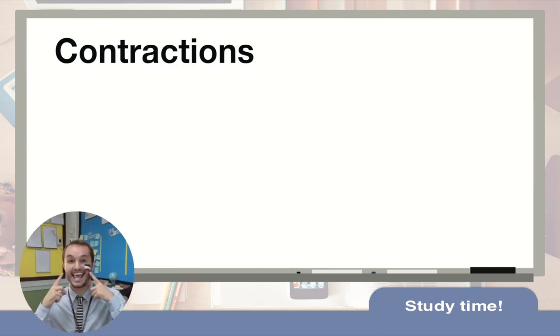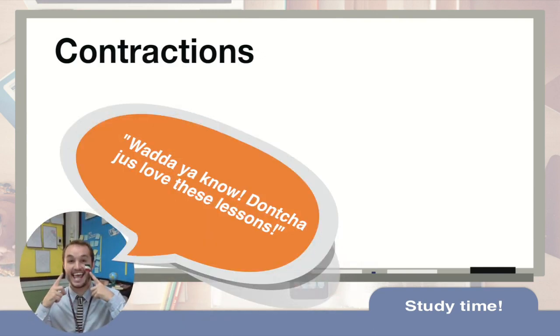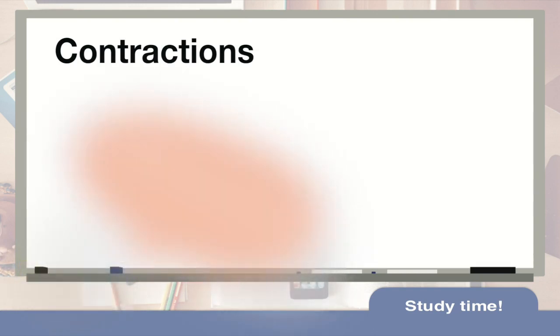In this part of the lesson, we'll be looking at contractions, and contractions actually mean something getting smaller. Native English speakers will often drop sounds or merge words together to speed up their speech. With practice, this can make you sound much more natural in English.